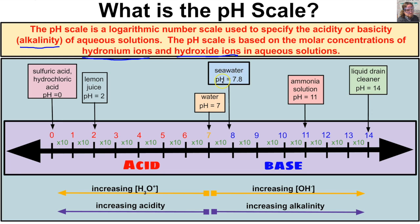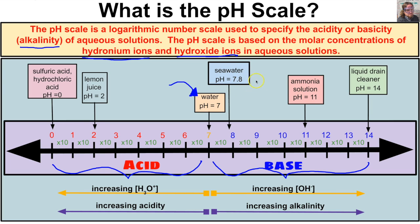Looking at the pH scale, it ranges from 0 to 14. Anything between 0 and 7 is an acid, and anything between 7 and 14 is a base. For example, battery acid and sulfuric acid have a pH of 0, lemon juice has a pH of 2, and water has a pH of approximately 7 — it has equal amounts of hydronium and hydroxide ions, making it completely neutral. Seawater has a pH of 7.8 and ammonia has a pH of 11.